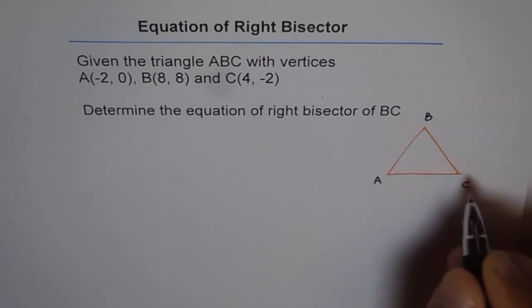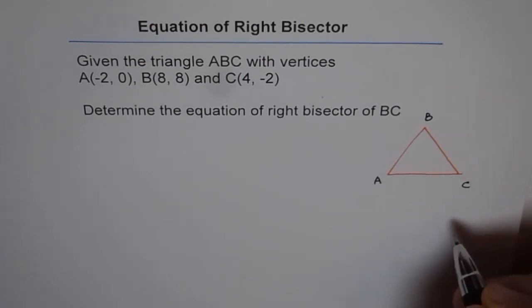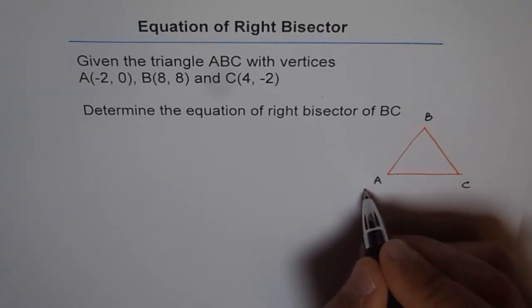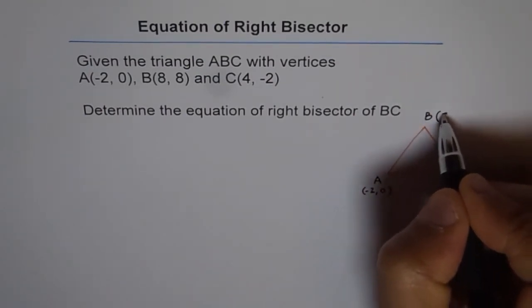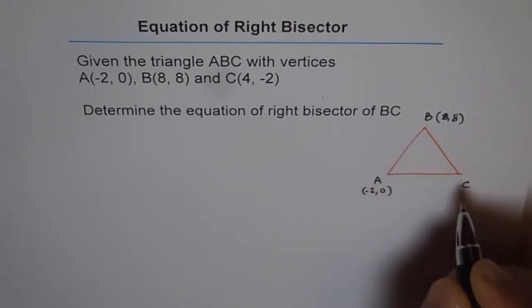Now the coordinates of point A are (-2,0). Coordinates of B are (8,8) and the coordinates of point C are (4,-2).